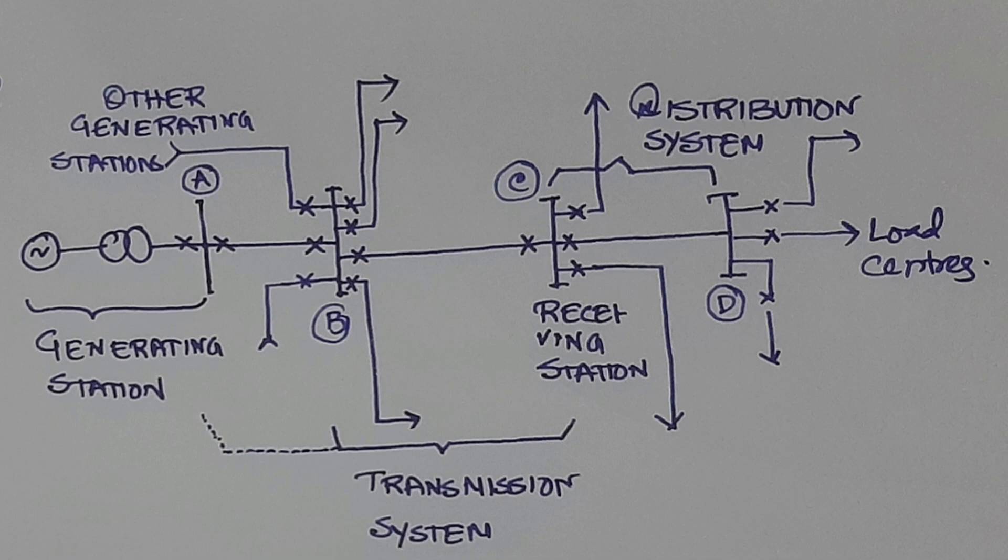B to C is a transmission system. At C, the power is received through one or two transmission lines or different number of transmission lines depending on its power capacity. Then there are different types of distribution systems and it is distributed